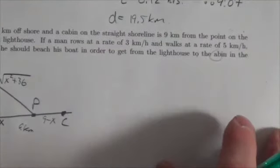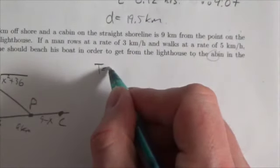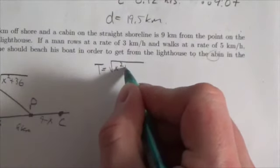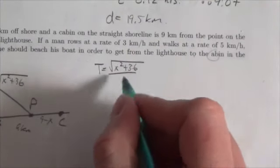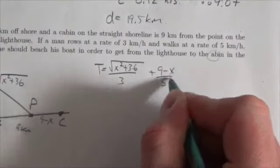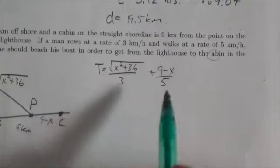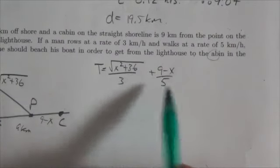Okay, so now we're gonna come up with an expression for time. The time that he takes here is going to be distance, so square root of x squared plus 36 all over 3, plus 9 minus x over 5. So this is the distance he's got to row divided by the speed which he rows, and this is the distance he's got to walk divided by the speed which he walks.